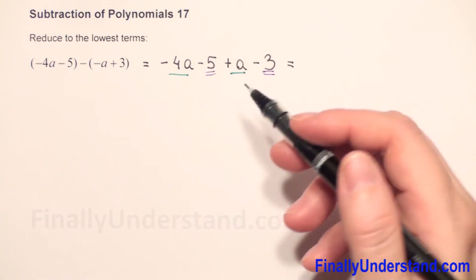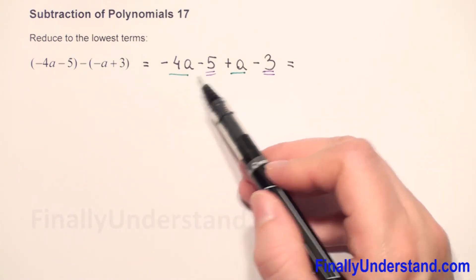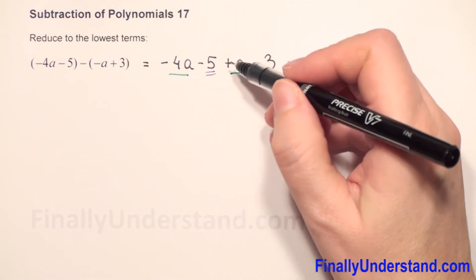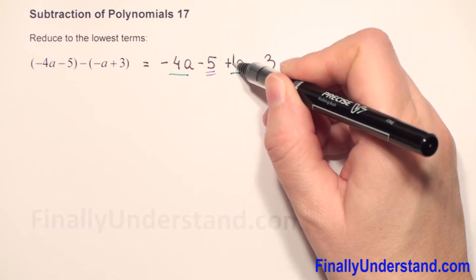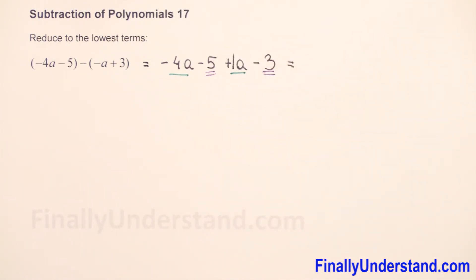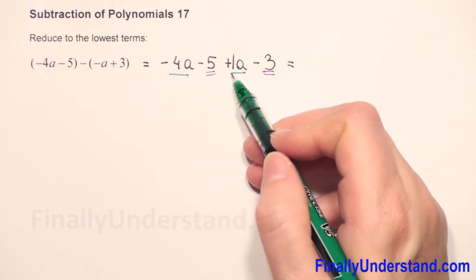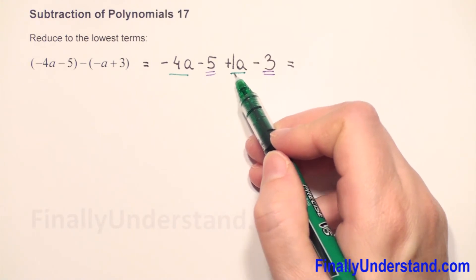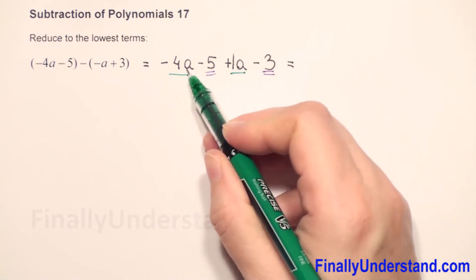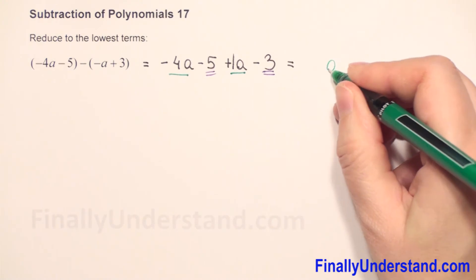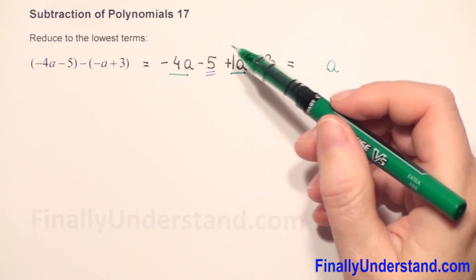So let's start from the beginning. We have negative 4a plus a. When we don't have a coefficient, it's always an invisible 1. We have negative 4a and plus 1a. We copy the variable a, and we have to add the coefficients.